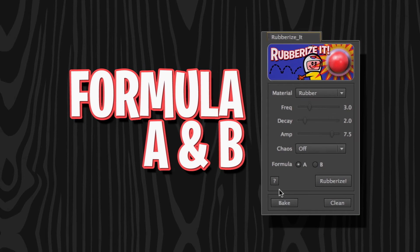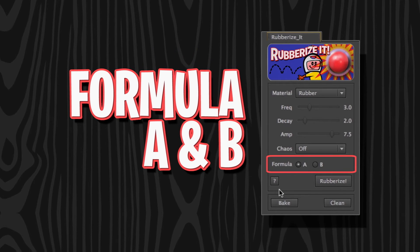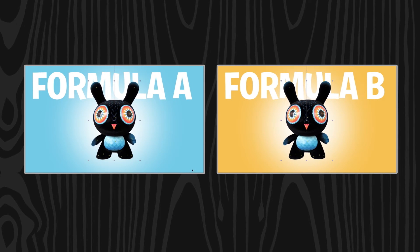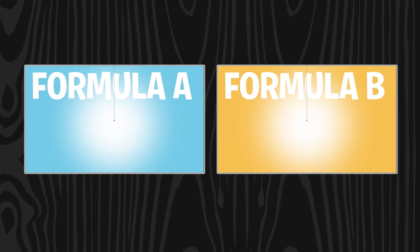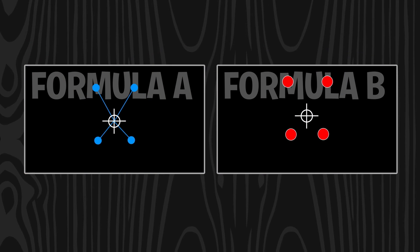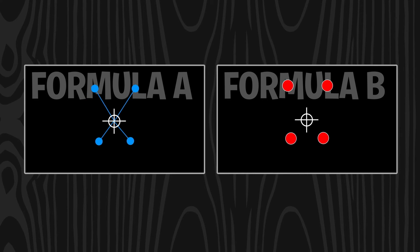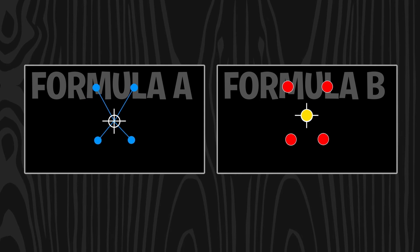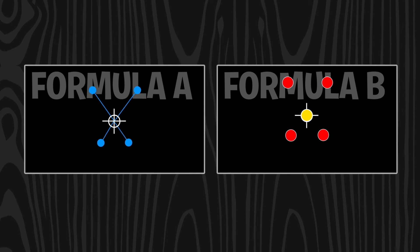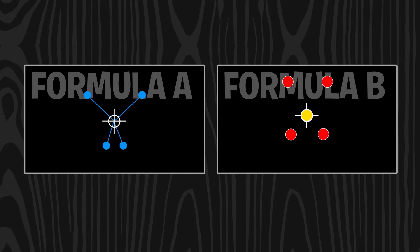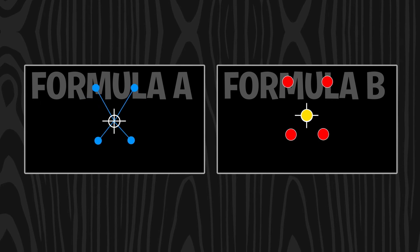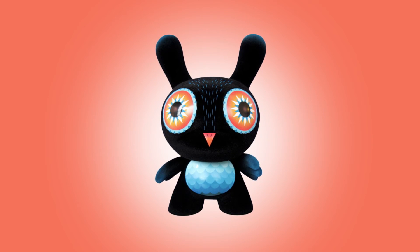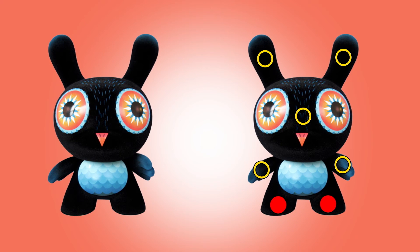The two formulas are variations on the algorithm Dan wrote to create the effect, and each has its strengths and weaknesses. The formulas differ in the way they relate to the anchor point: Formula A is hinged to the anchor point, and Formula B pretty much ignores the anchor point. One key difference is that Formula B needs clean pins — unrubberized pins — to act like an anchor, giving the other pins something to pull against. Formula A does not, but it can also benefit from them depending on what you're looking for. If you see the layer just kind of bouncing around without deforming, that's pretty much telling you to put down at least one clean pin.